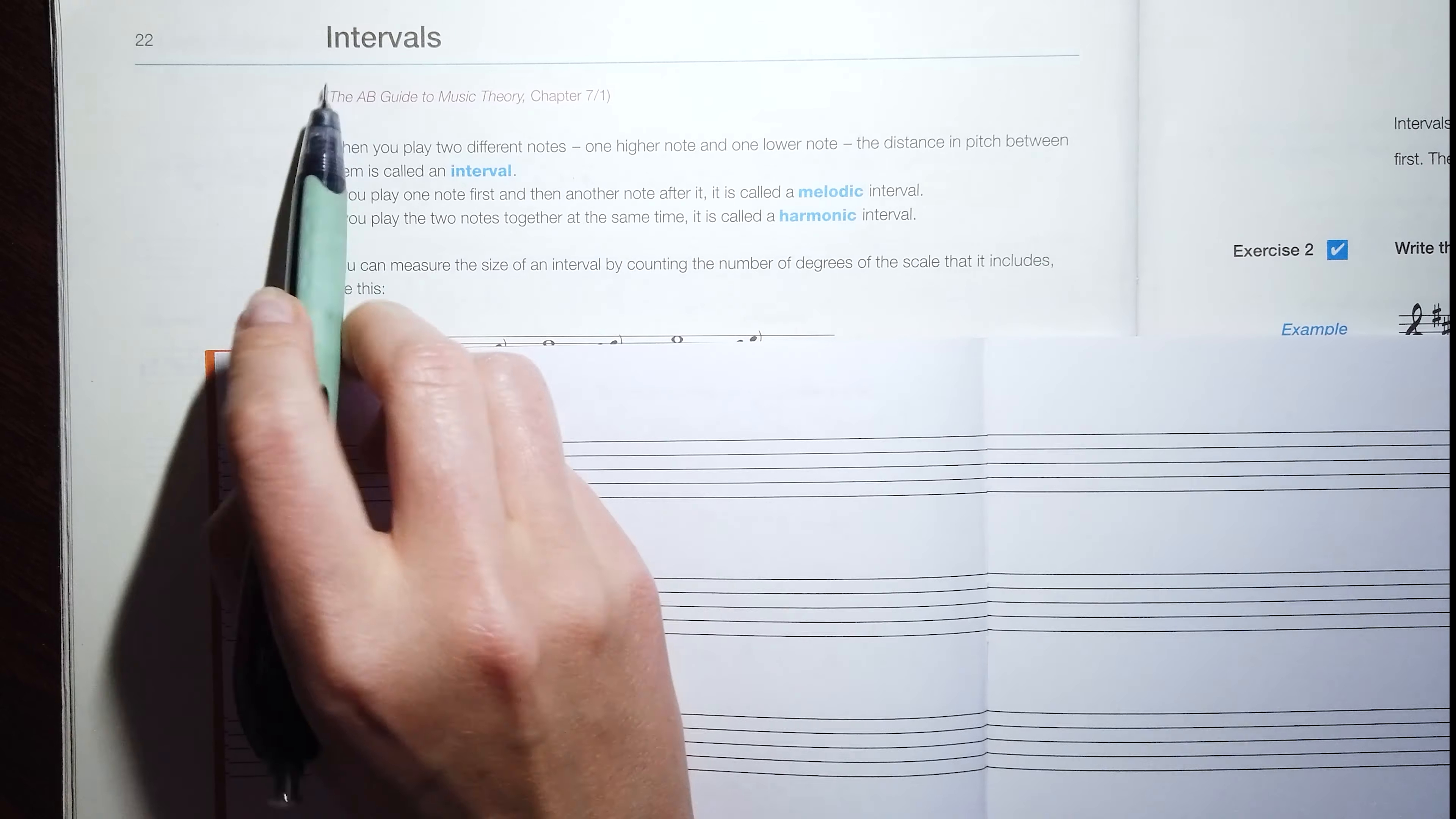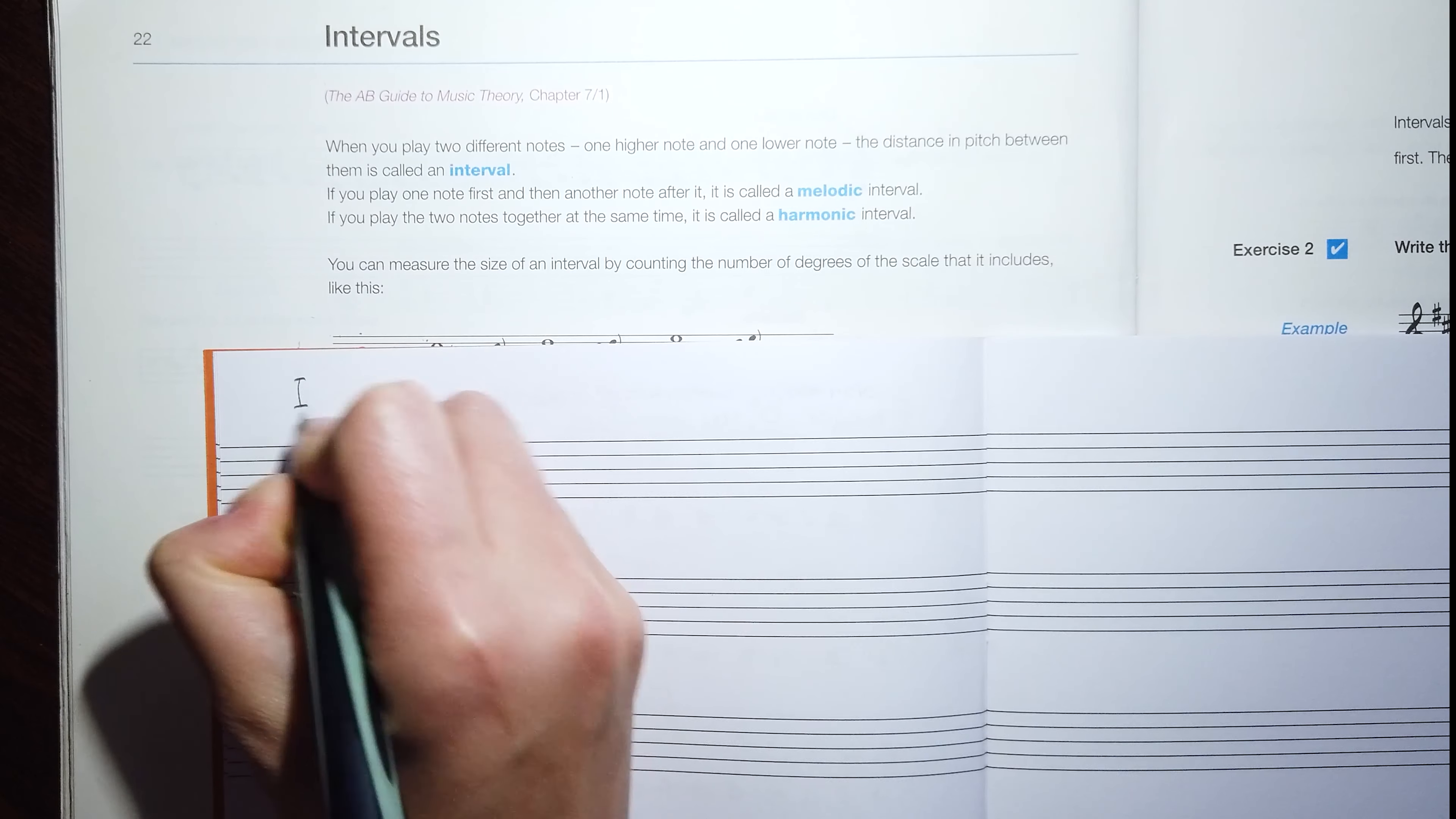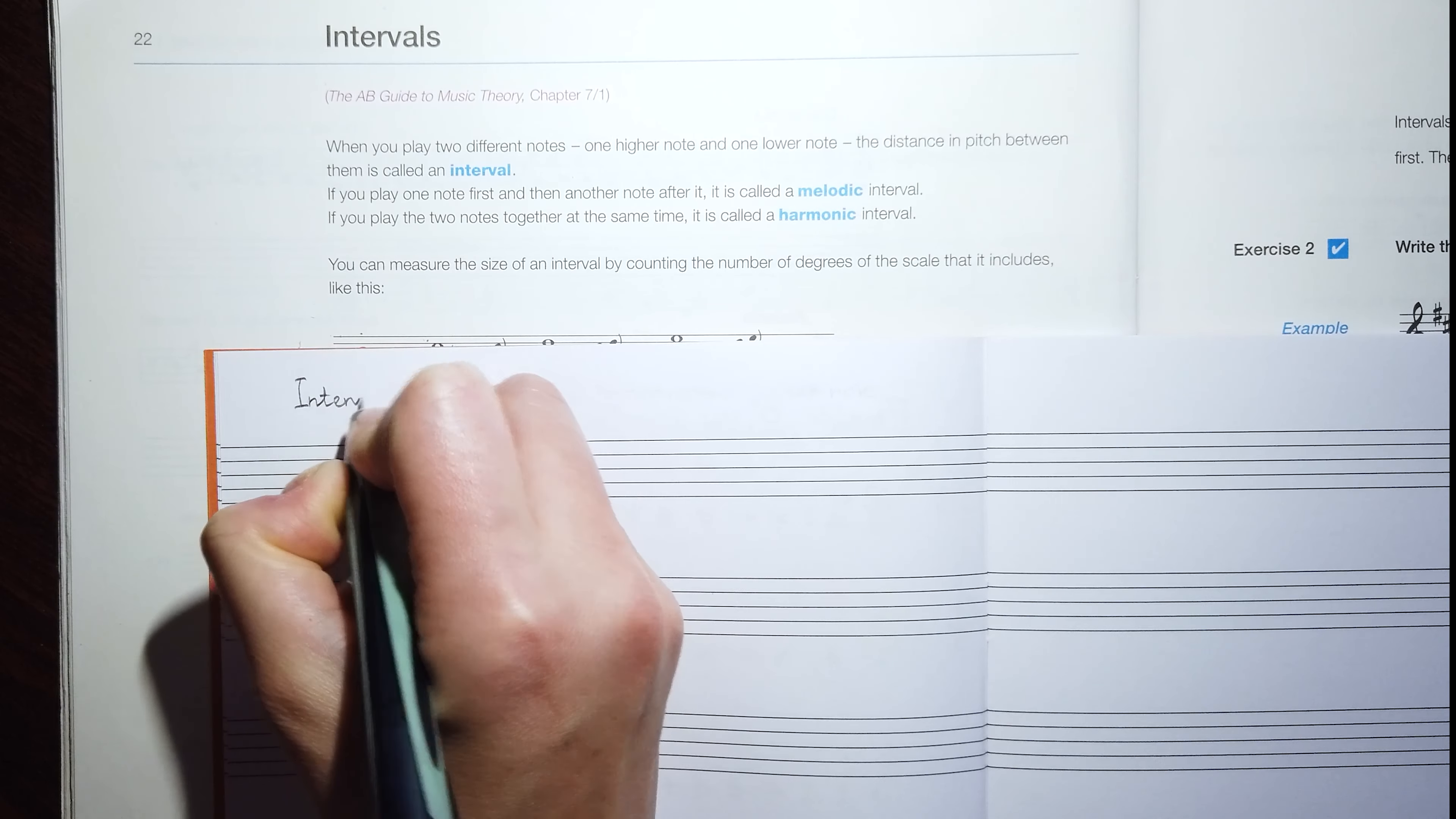Now we have to speak about the intervals. When you play two different notes, one note higher and one note lower, the distance between the pitch of these two notes is called an interval. We always have to remember that the interval is the distance between the lower and the upper note.